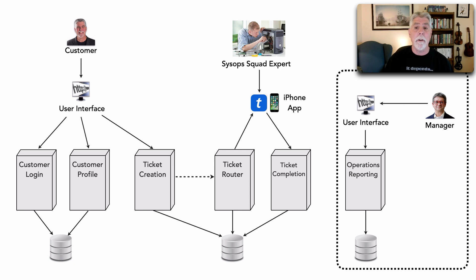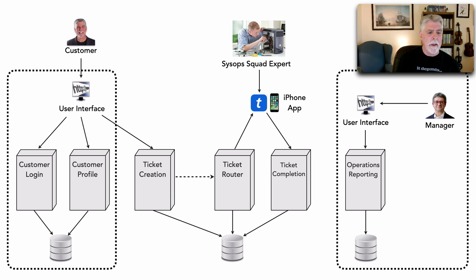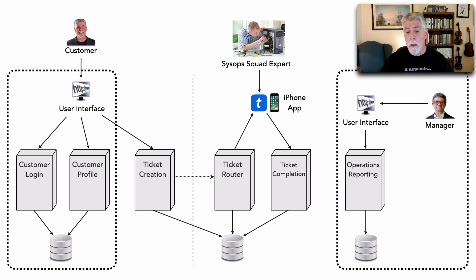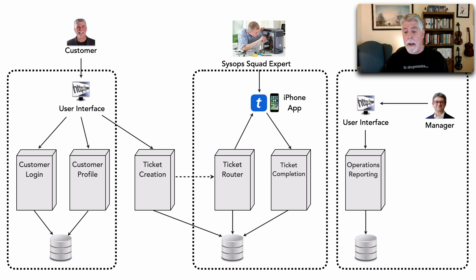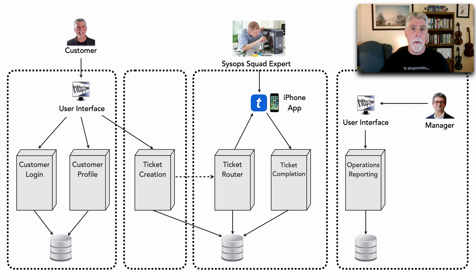Certainly the easy one is operations reporting — the interface, the service, and the database are completely independent from all other parts and don't depend on anything else. We might also look at the customer login and profile with the corresponding user interface as a separate part. We'd like the whole backend piece — routing and completion — to be a separate part as well, and ticket creation might be another customer-facing piece, suggesting four architectural quanta.